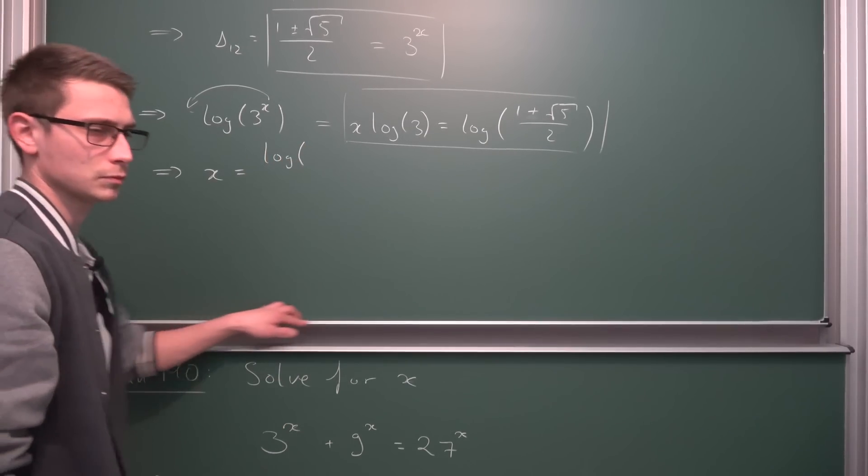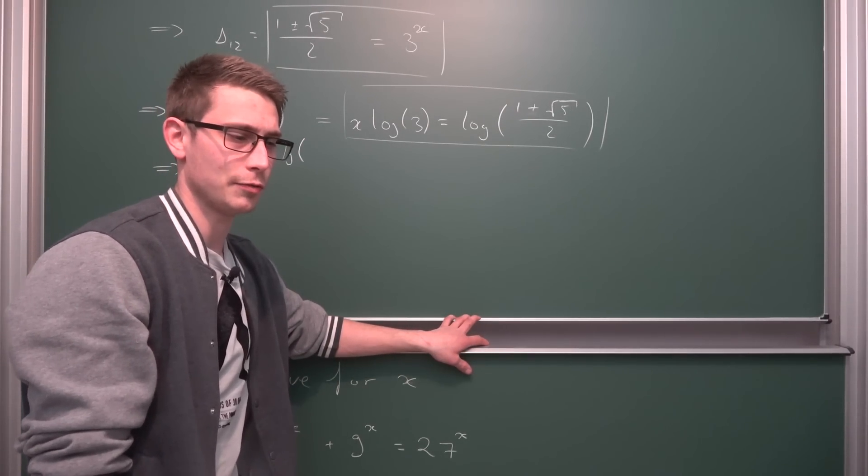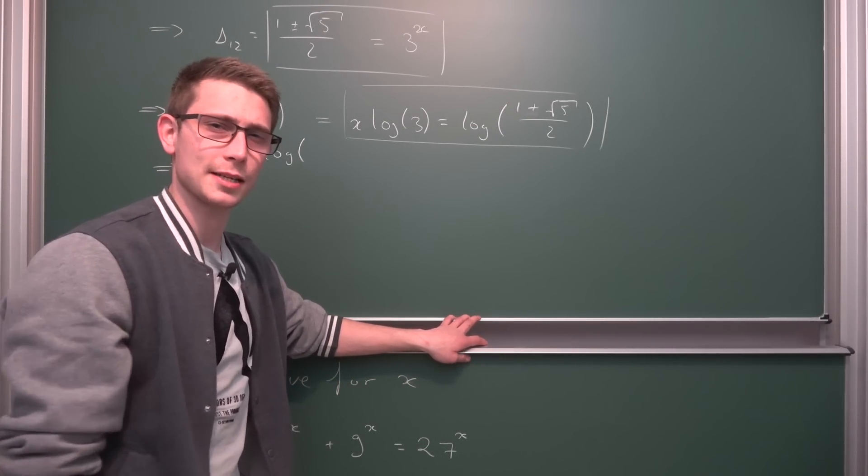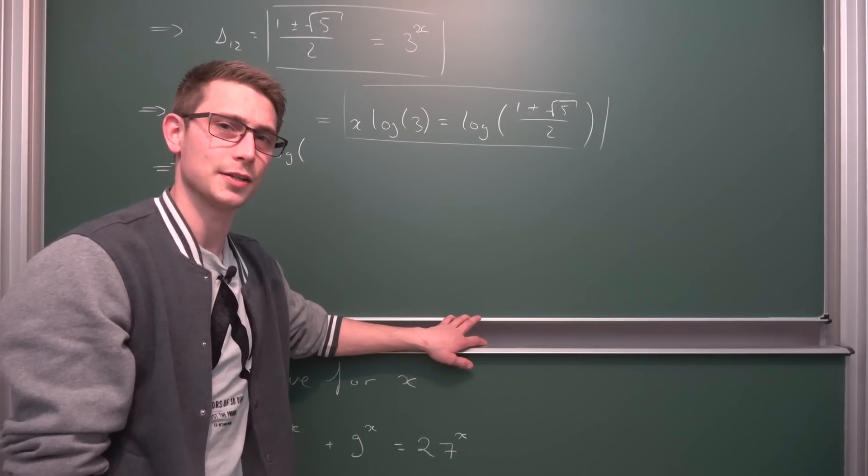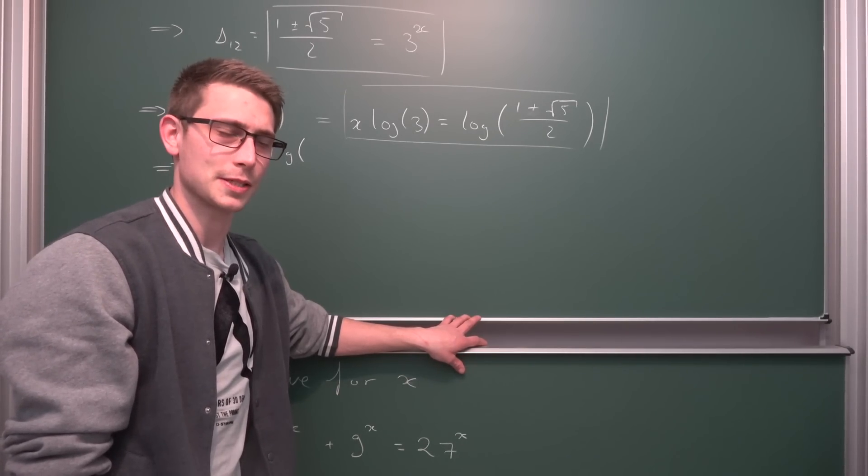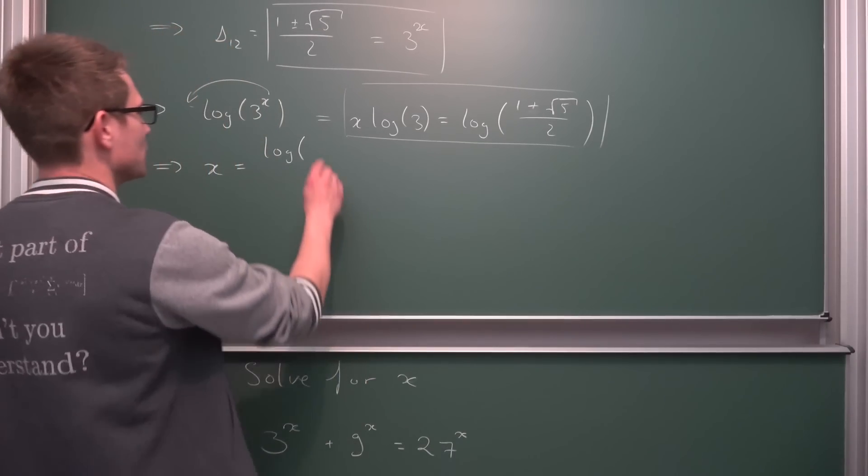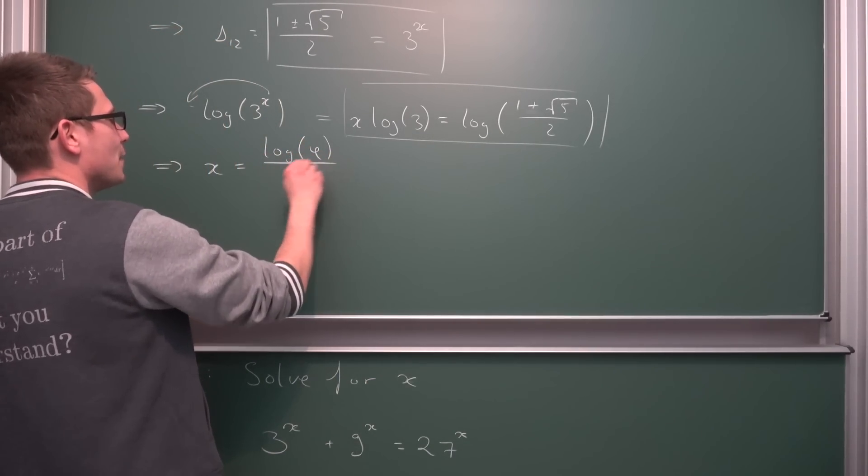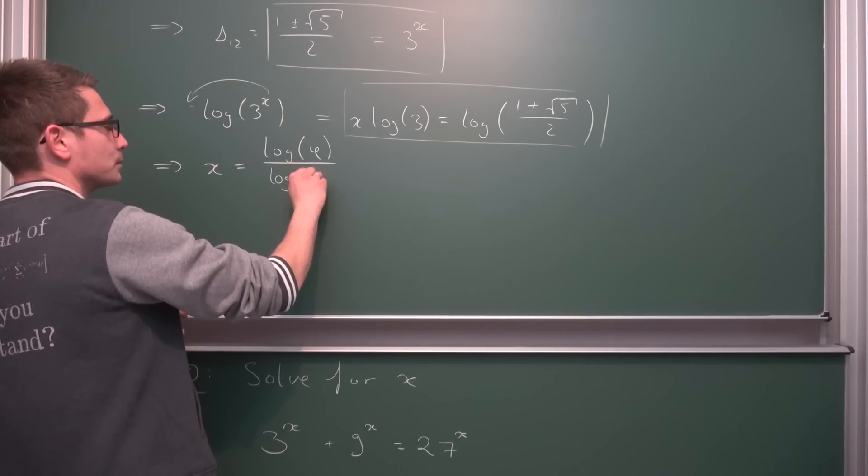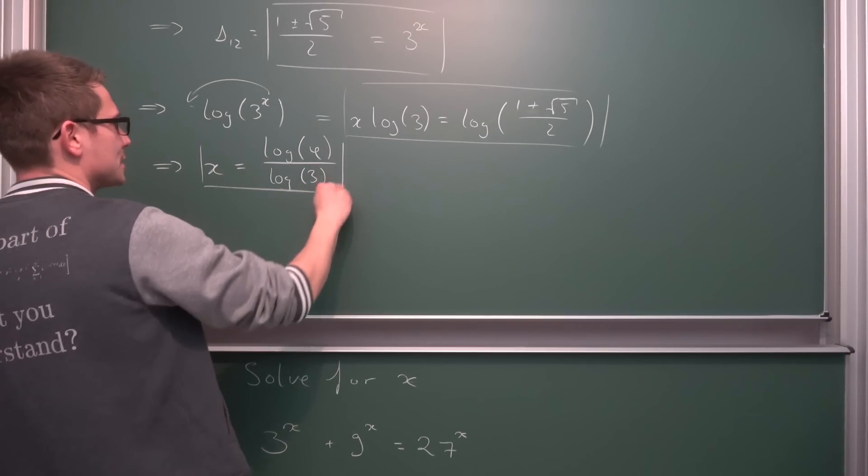Meaning what we can do is we can now divide both sides by the logarithm of three, giving us that the solution to our equation is log of one plus the square root of five over two. I promise you guys that it's a very satisfying solution and if I'm not mistaken, one plus the square root of five over two is the so-called golden ratio. So this makes for a very, very golden equation here. And this right here is our solution.